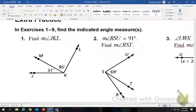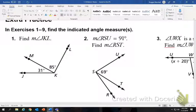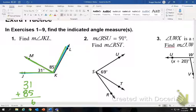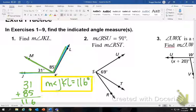We'll go to the next page. It says find the measure of JKL. You know you have 31 degrees, and then you have 85 degrees, so we're going to add them together. So we'll get 116 degrees. So we'll say the measure of angle JKL is 116 degrees. Boom. That's it.